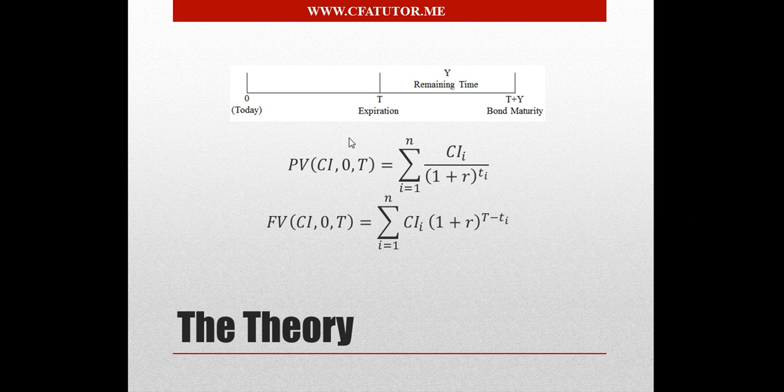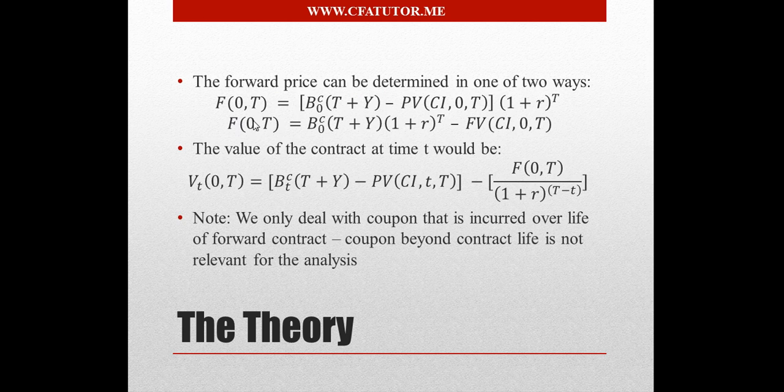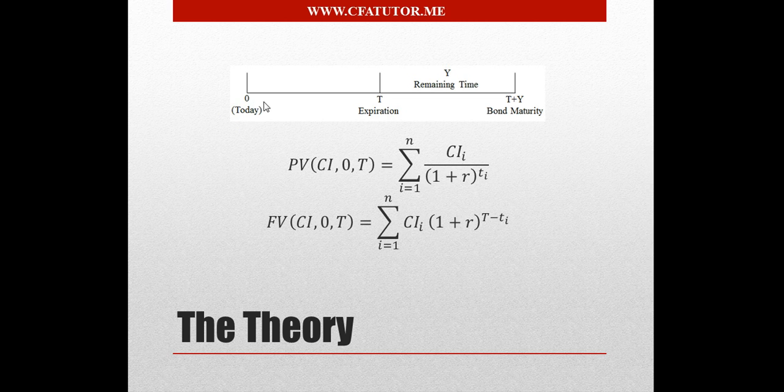Basically, we will be dealing with a bond that's issued today, and then it has T days to expiration, so this is the expiration of the forward contract. However, the bond maturity has to come after the expiration, so there is a remaining time between the expiration and the bond maturity, which we're going to refer to as Y, the remaining time.